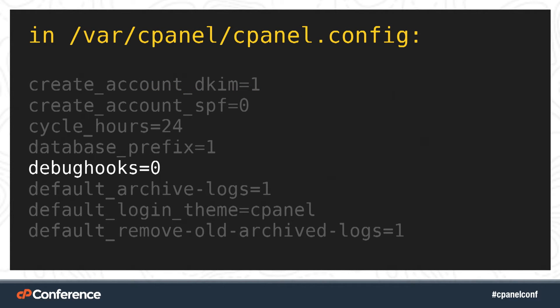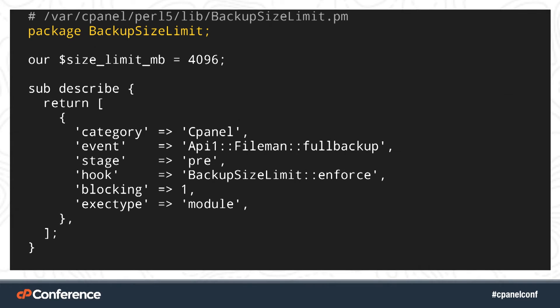Once you've gotten the information you need, remember to set debug hooks equal to zero and restart cPanel again. Now you can start coding. This is the first half of a Perl module I wrote to prevent backups if an account is too large. You can write hook scripts in another language, but it is worth your time to do it as a module in Perl for at least three very important reasons we'll cover in a bit. The module is named BackupSizeLimit. The file is in /var/cpanel/perl5/lib, which does not exist on a cPanel install by default. This directory is the last directory where cPanel's Perl will look for modules, so don't think you can override built-in modules by placing them here.